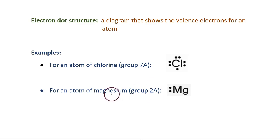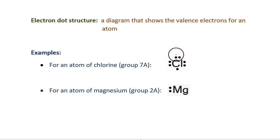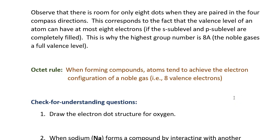Another example: an atom of magnesium. Magnesium is in group 2A, so it has two valence electrons. You write Mg and then next to that you put two dots. You don't have to put the dots side by side; you might have one on the side and one up above. Notice that for chlorine there aren't three dots on any one side of the symbol — at most you would pair up the dots. There is room for only eight dots when they are paired in the four compass directions, corresponding to the fact that the valence level of an atom can have at most eight electrons, since s can hold a maximum of two electrons and p can hold a maximum of six. Two plus six makes eight.